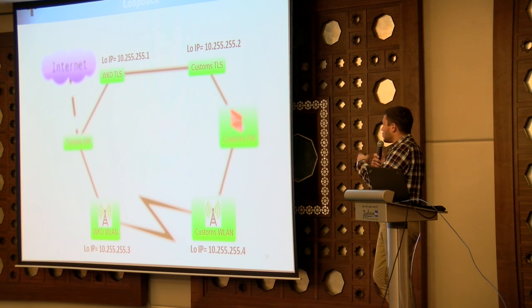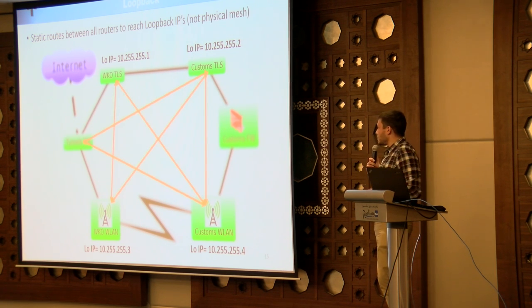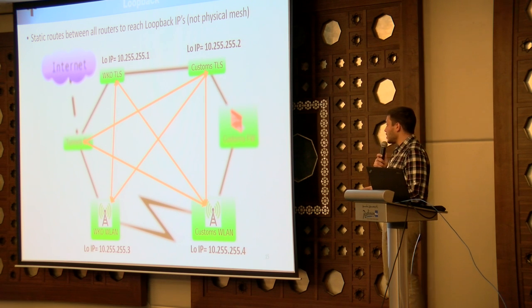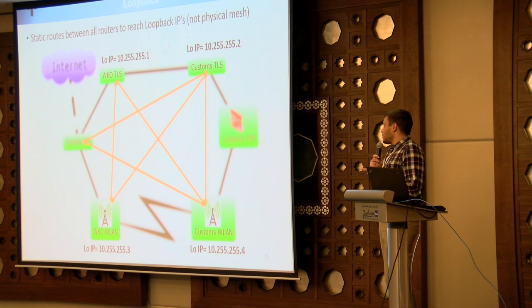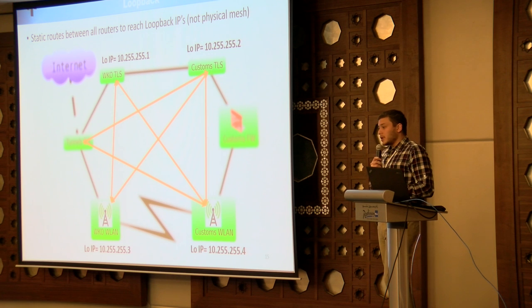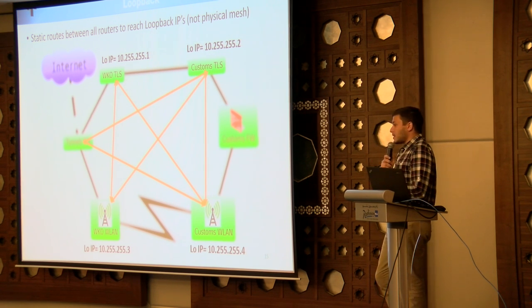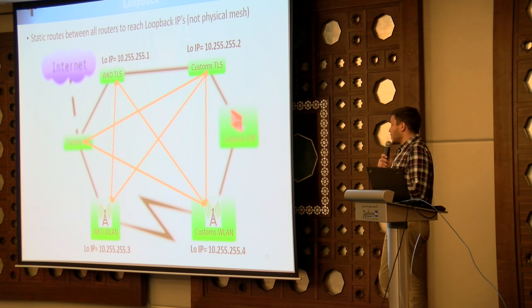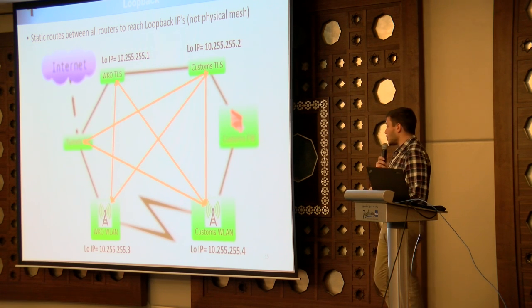These are the IP addresses I put on each of the four redundant routers. This is not a physical mesh — I'm just showing that all routers have static routes that let them reach the loopback IP address of the other routers by any available path. Since loopback interfaces are never going to be down, if there is any way to reach them, you will be able to manage the router.